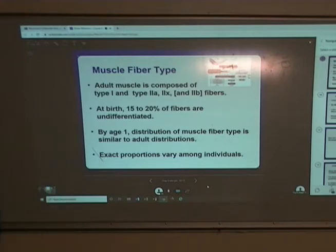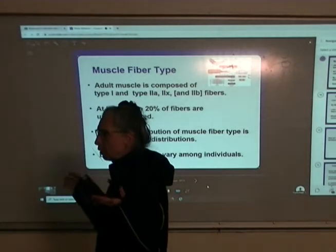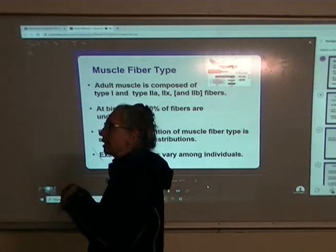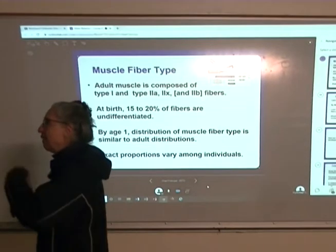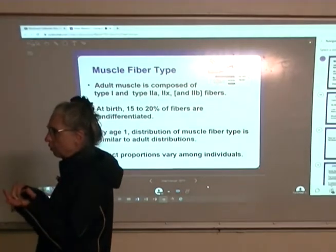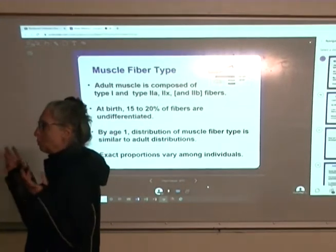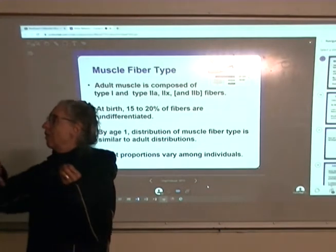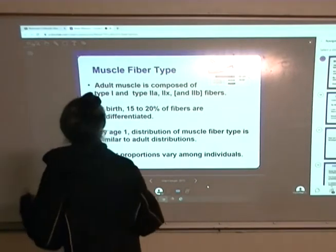The ratio of type 1 to type 2 fibers is different among individuals. In an average person it's around 50-50, meaning an average person is okay at running fast and okay at running for a long time, but not great at either. When we watch people who are truly great athletes, they are a little bit unusual — freakish, really — in their physiology.